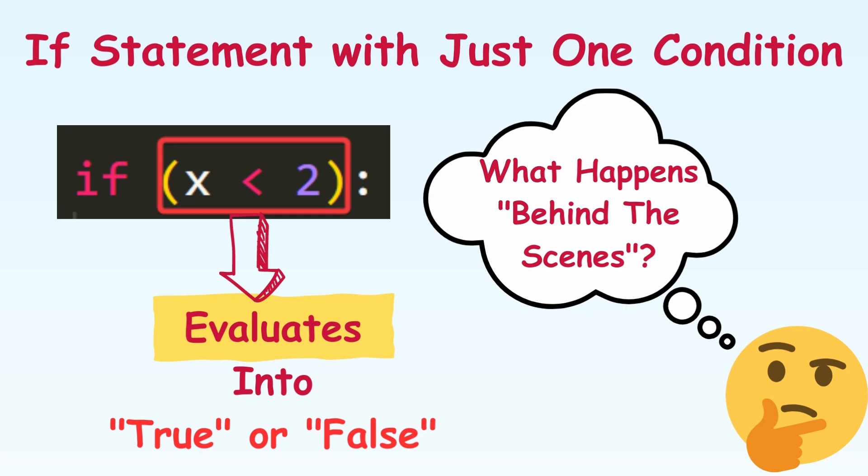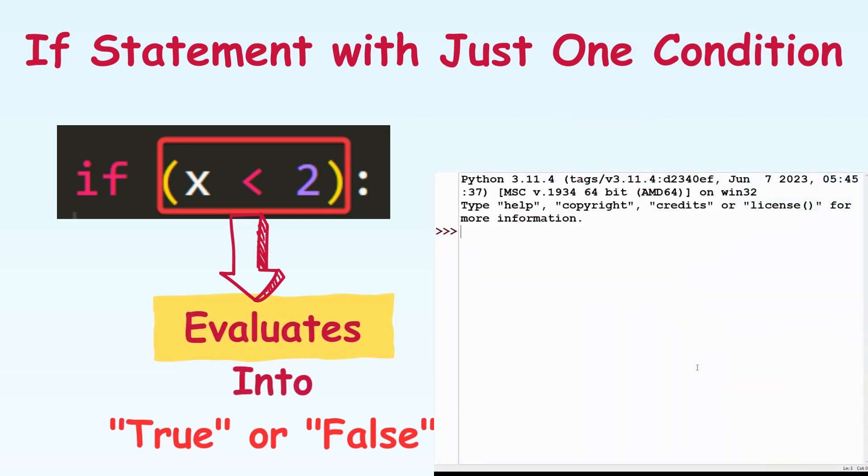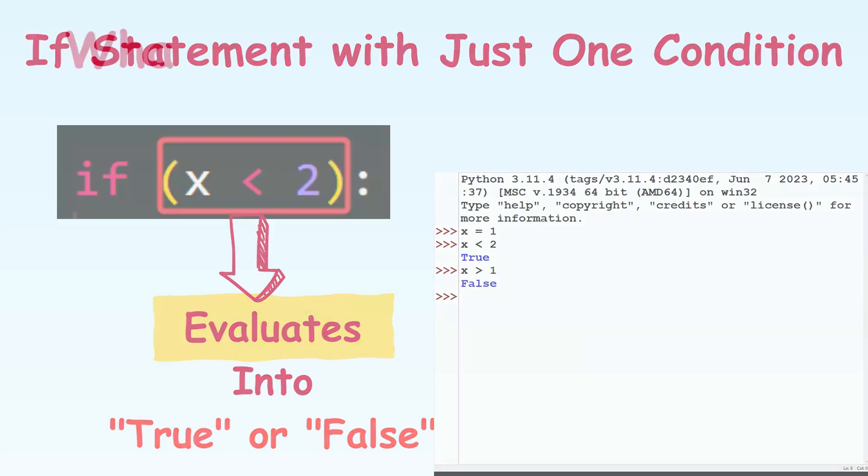So I assign x equals 1 and then I simply type x less than 2 and the Python interpreter prints out true. If I type x greater than 1 and press enter I get false. So what's happening here?